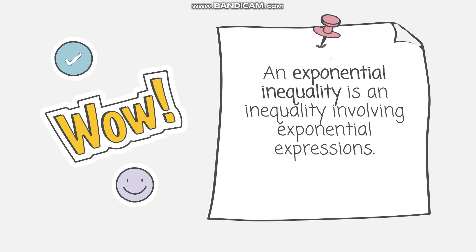What is an exponential inequality? An exponential inequality is an inequality involving exponential expressions. It's like exponential equations, but we're just changing the symbols. For example, 2 raised to x plus 1 is greater than 8. Another example: 3 raised to 3x minus 4 is less than or equal to 5. These are examples of exponential inequalities — as long as there's a variable in the exponent of our expressions.